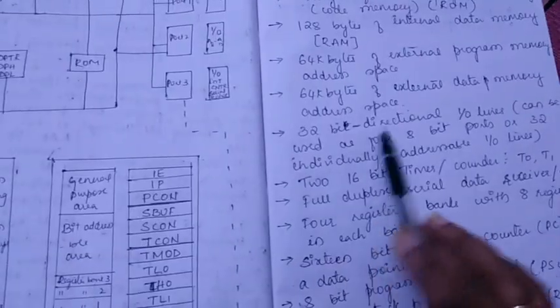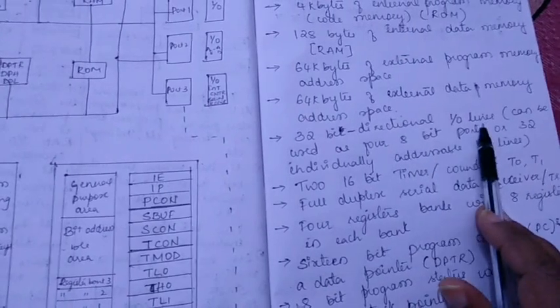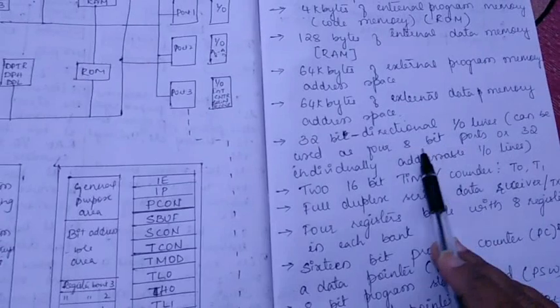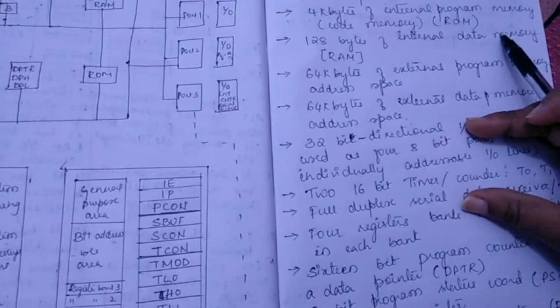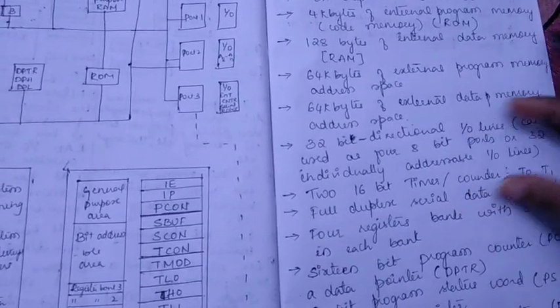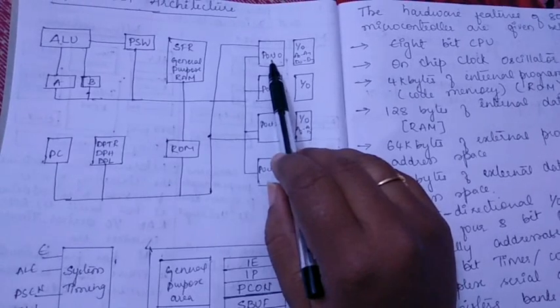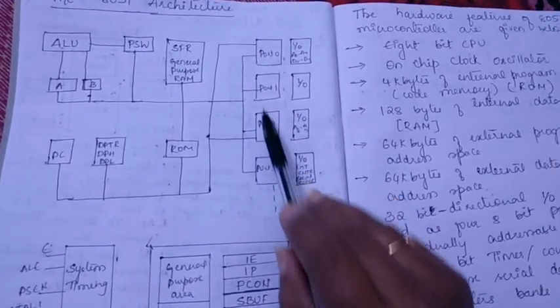Next we have 32 bi-directional input output lines that can be used as 4 8-bit ports. In the sense 8 times 4 is 32. Each 8 lines can be used for port 0, port 1, port 2, and port 3.